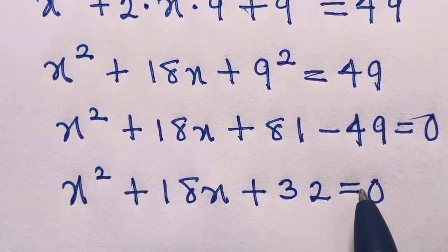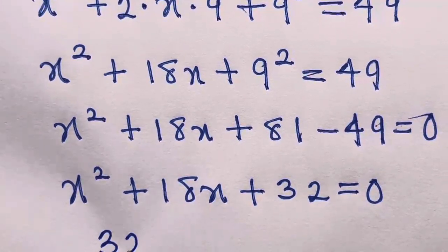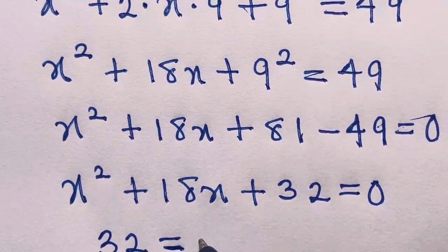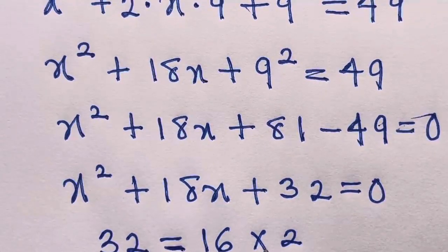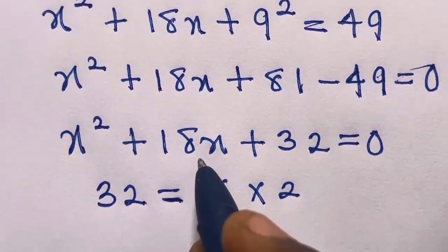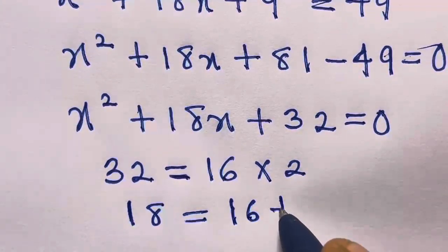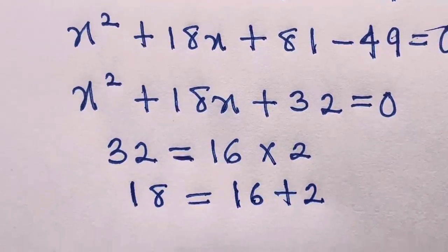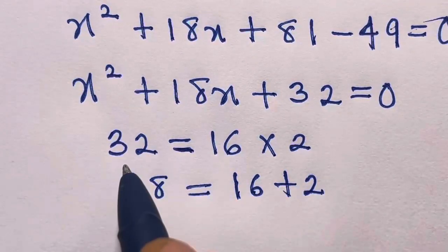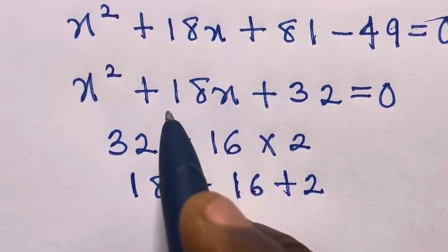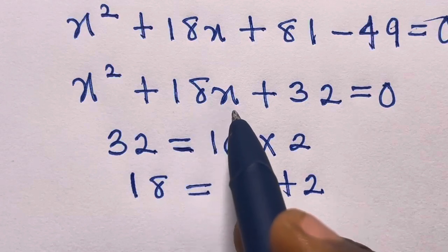Now let's use the factorization method for this. We have the product here, which is 32. Factors of 32 that work are 16 times 2. And if we add them together, 16 plus 2 equals 18. So we have two factors that multiply to give 32 and add to give 18x.